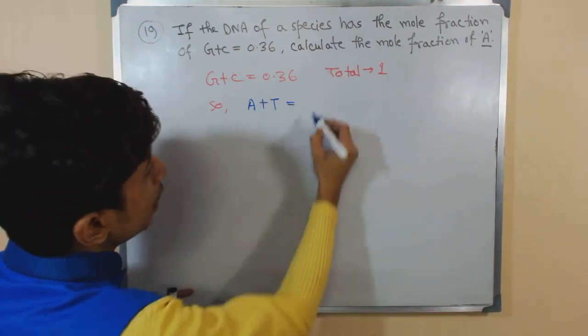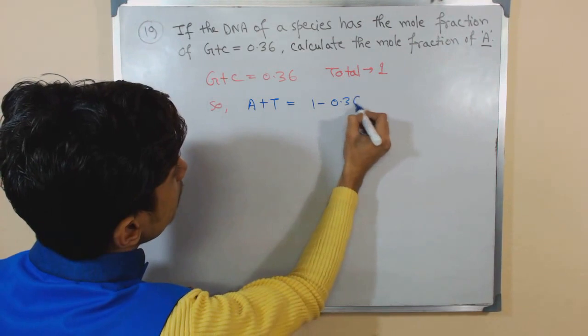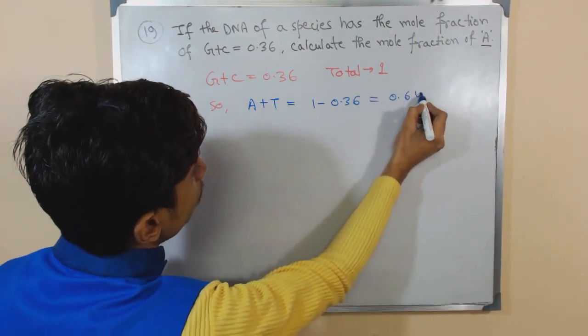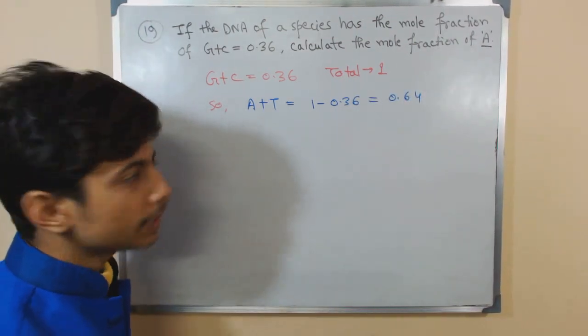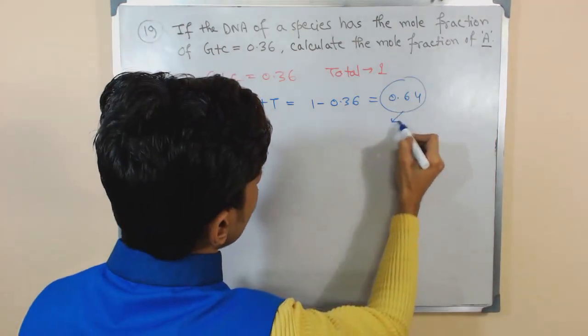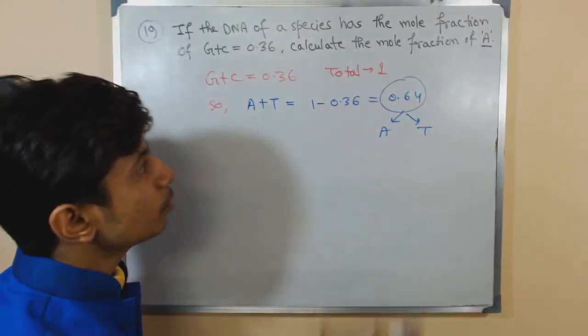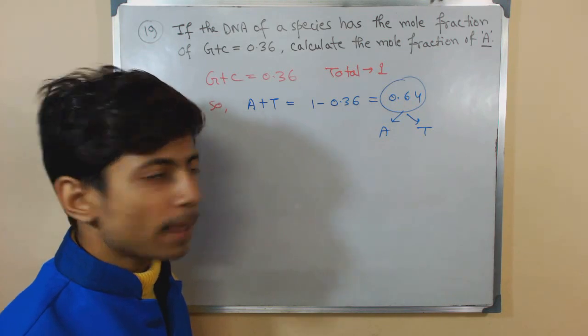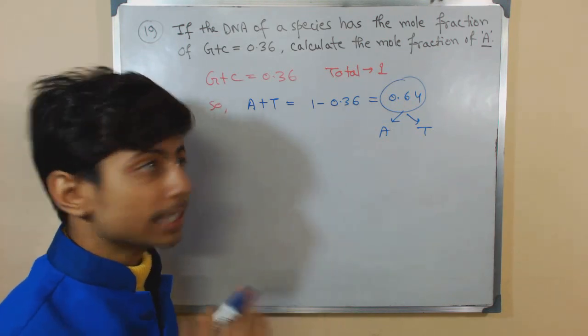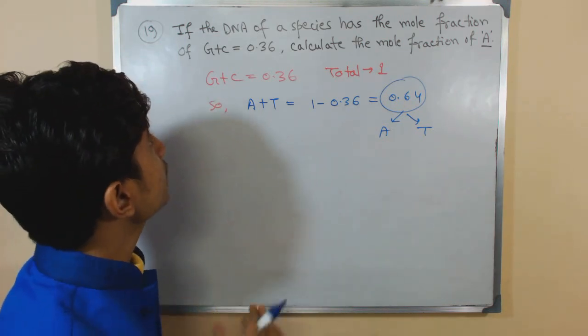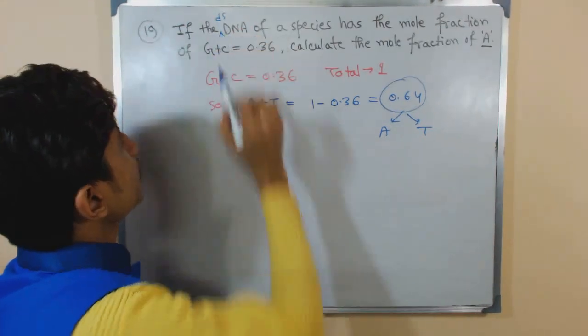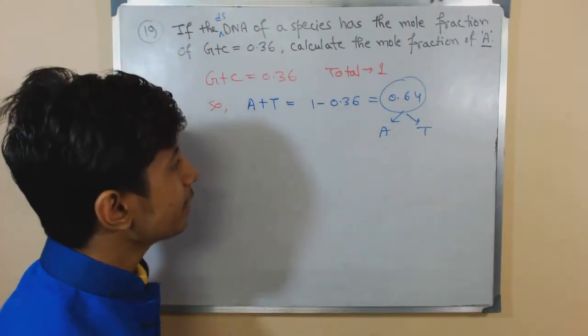The value of adenine and thymine combined will be 1 minus 0.36, which gives us 0.64. This consists of adenine and thymine. The mole fraction tells us that in a double-stranded DNA - let's write double-stranded here - in double-stranded DNA...